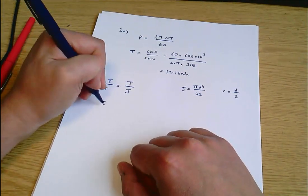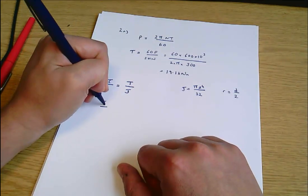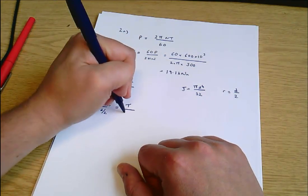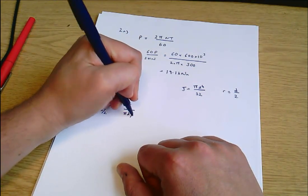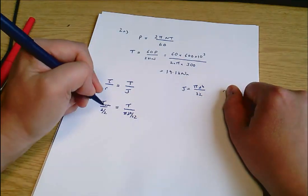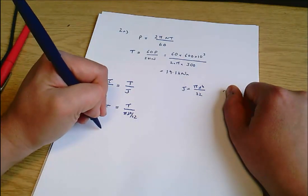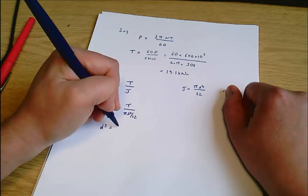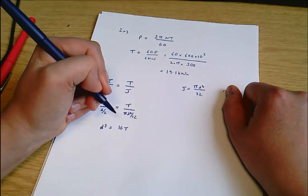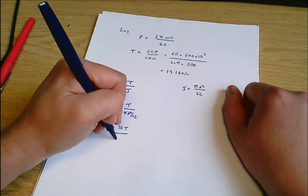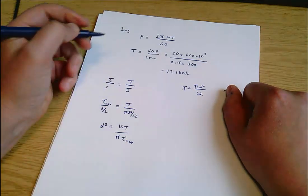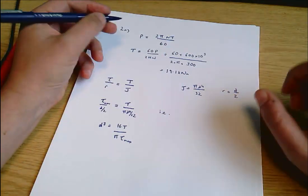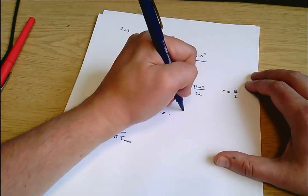Rewriting, I get tau max over D on 2 equals T over pi D to the 4 on 32, and if I rearrange that I'll get D cubed equals 16 T divided by pi tau max. I guess I can put in one more intermediate stage here. These fractions within fractions make it particularly confusing.